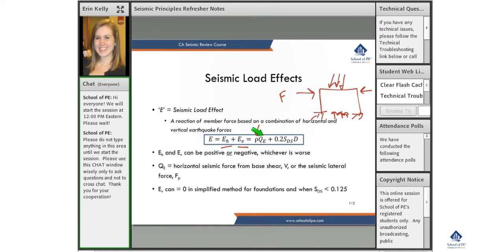And then we have a vertical component, which is 0.2 times SDS times D. So D is dead load. So this is the same as you would have in like your 1.2 dead plus 1.6 live, the dead load. So it's the gravity.